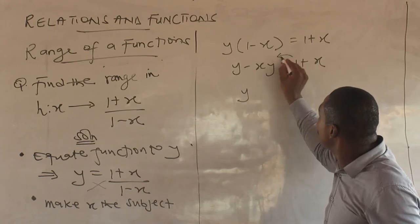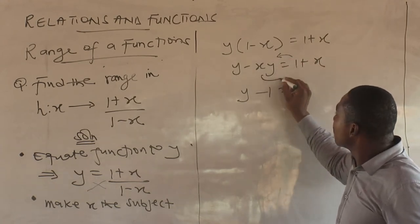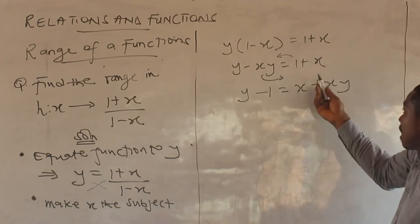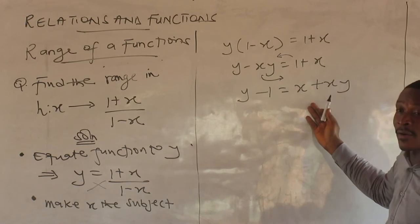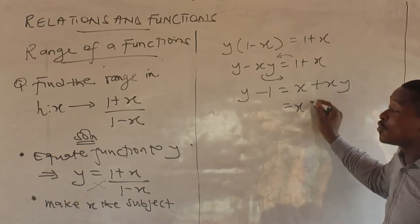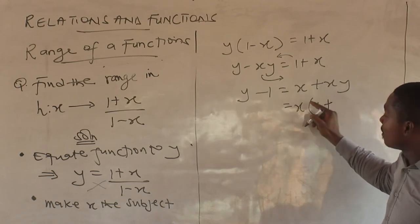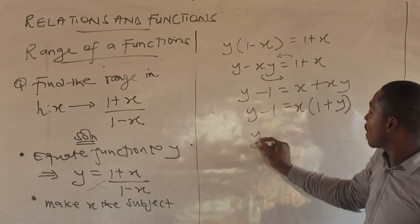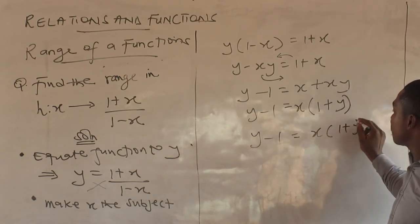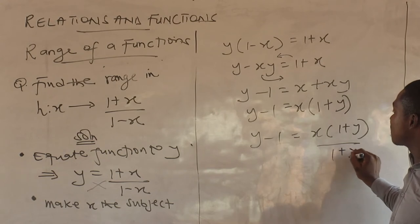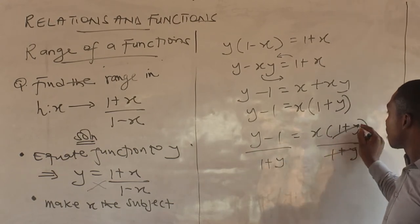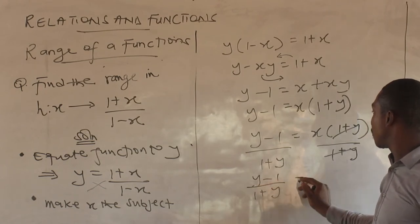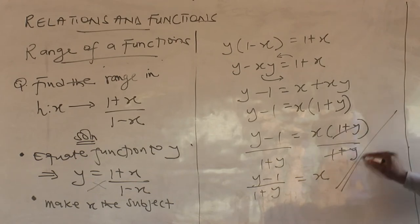All the x terms come together so we can factor. We have x times one plus y equals y minus one. Now divide through by the bracket to set x free: x equals y minus one over one plus y.